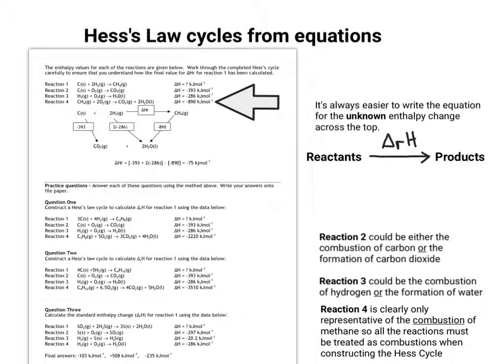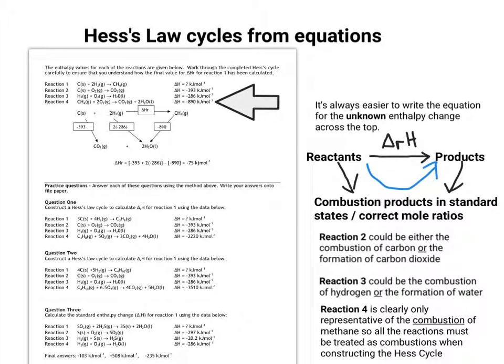So because reaction 4 can only be treated as a combustion, that means you've got to treat all of them as combustions. So the Hess cycle has got to look something like this. And as you can see, that's exactly what's been put in place there.